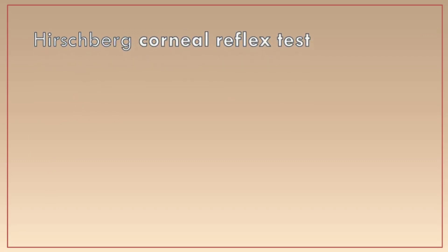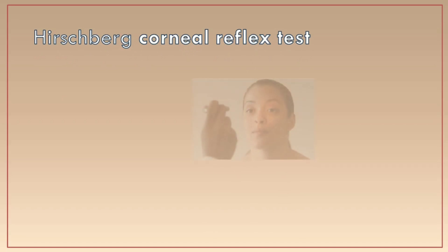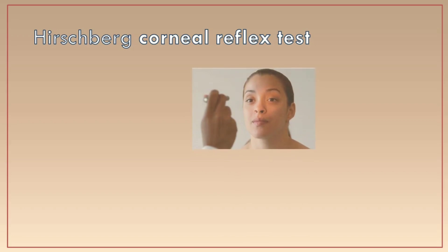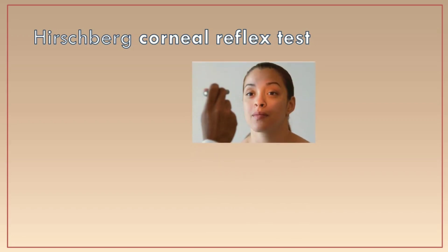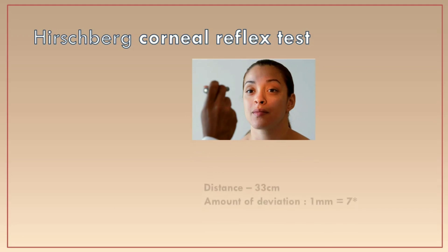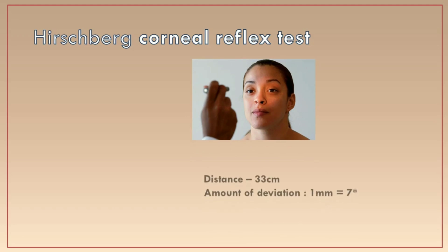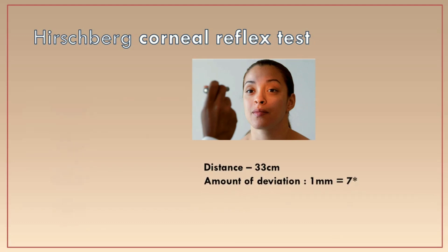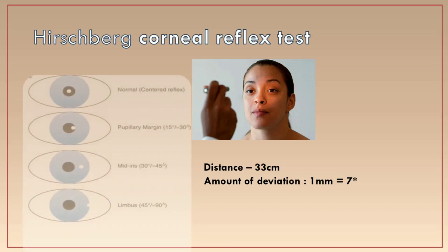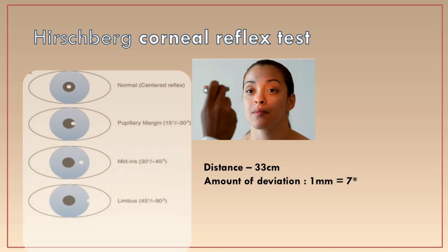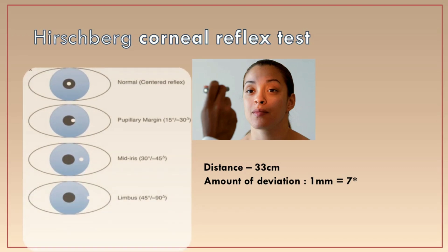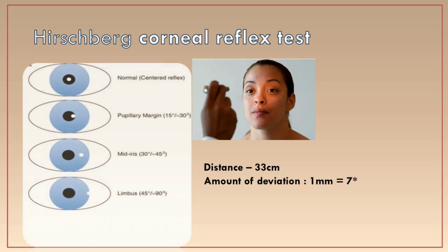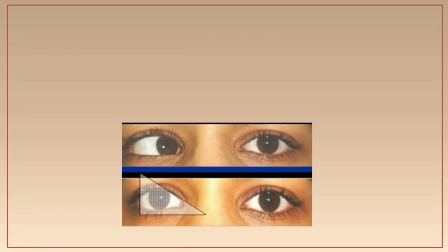In the Hirschberg corneal reflex test, a torchlight is placed at 33 centimeters and focused on the eye. One millimeter of deviation equals 7 degrees. As seen in the pictures: if the light reflex is at the center of the pupil, that is orthophoria. If the reflex is at the margin of the pupil, it is 15 degrees. If between the pupil and the limbus, it is 30 degrees.